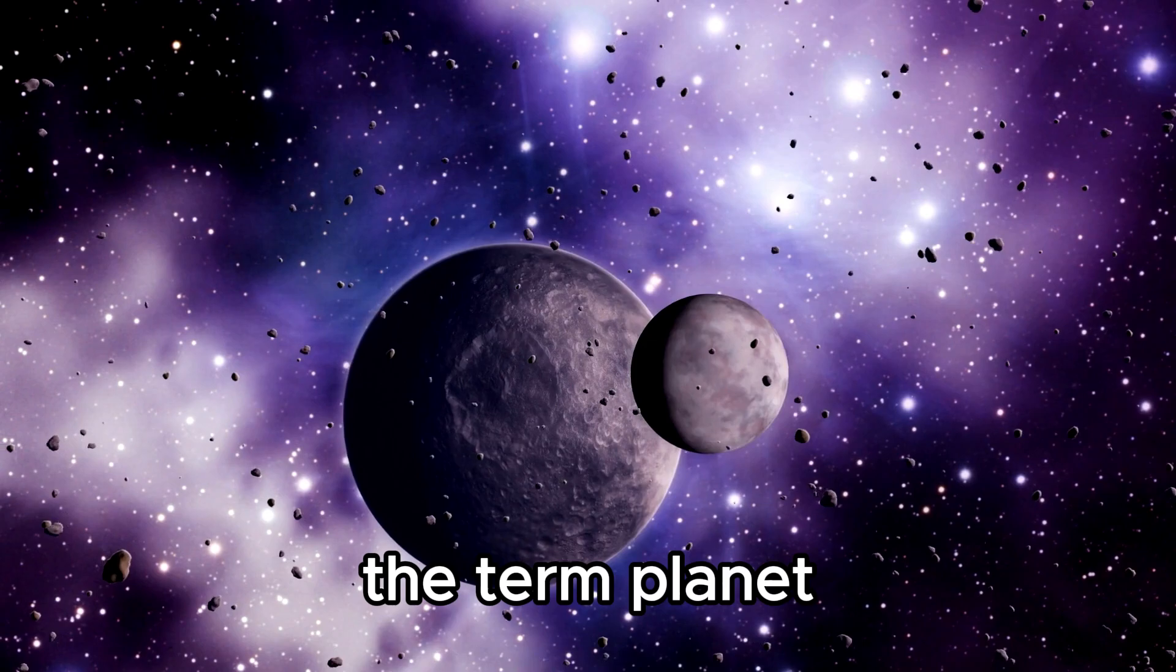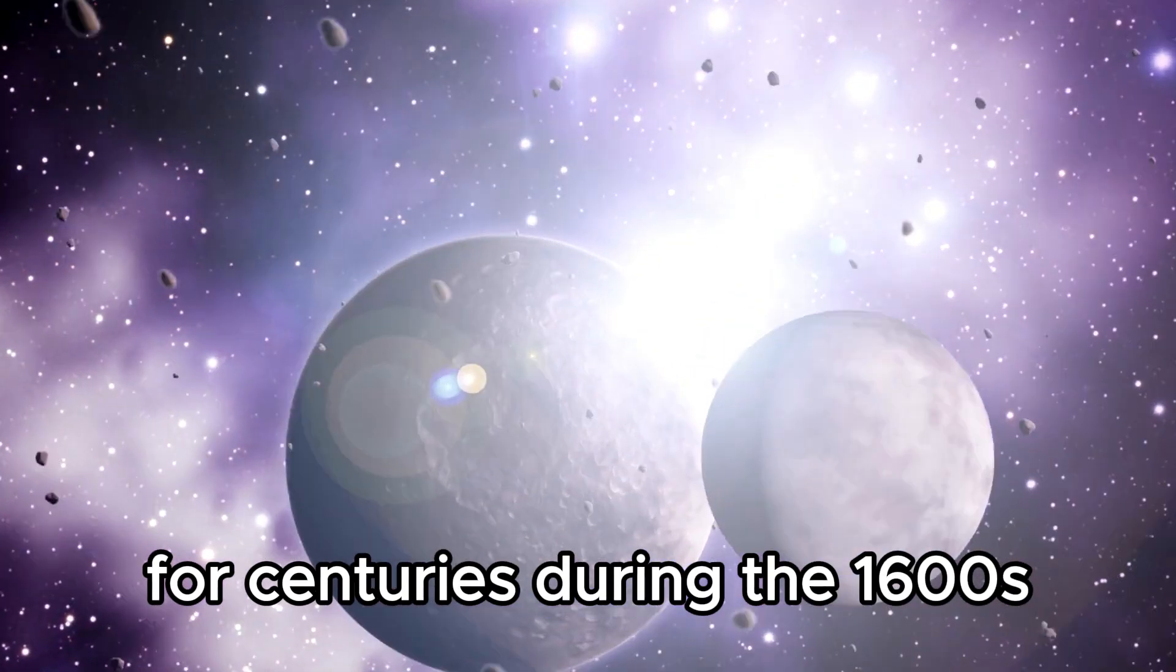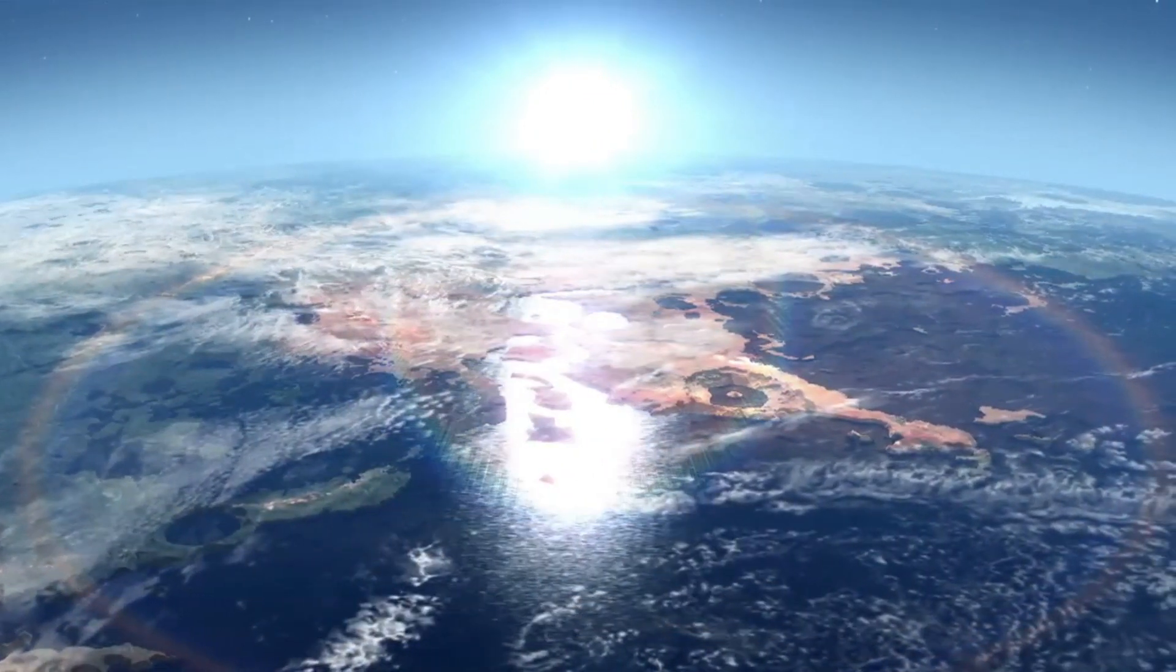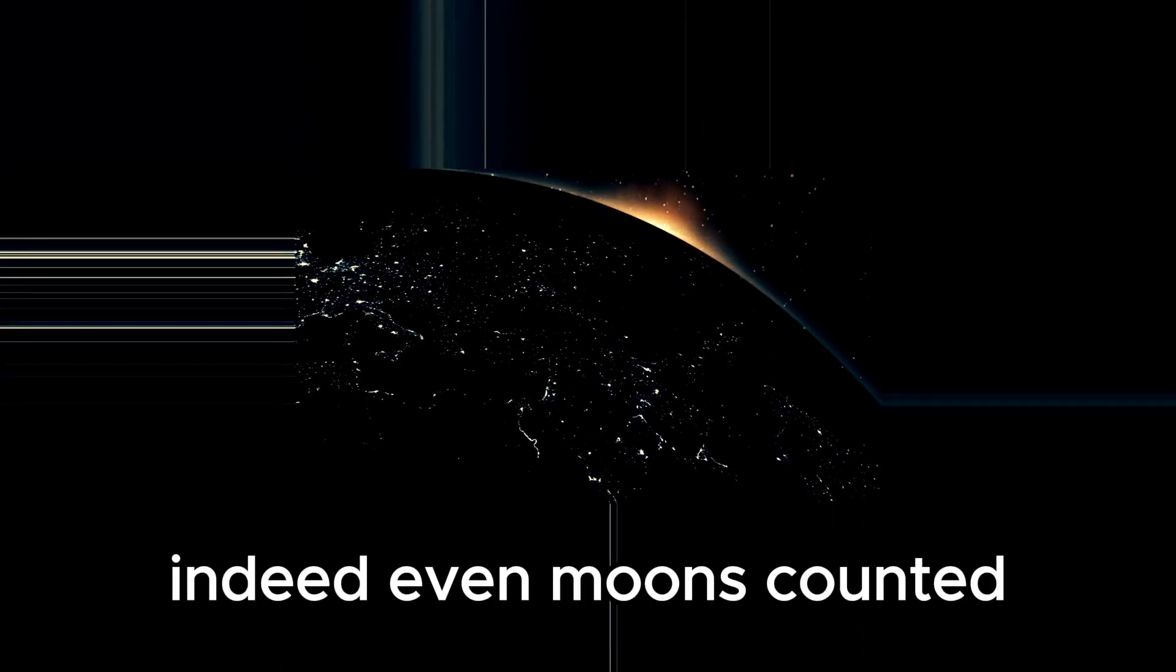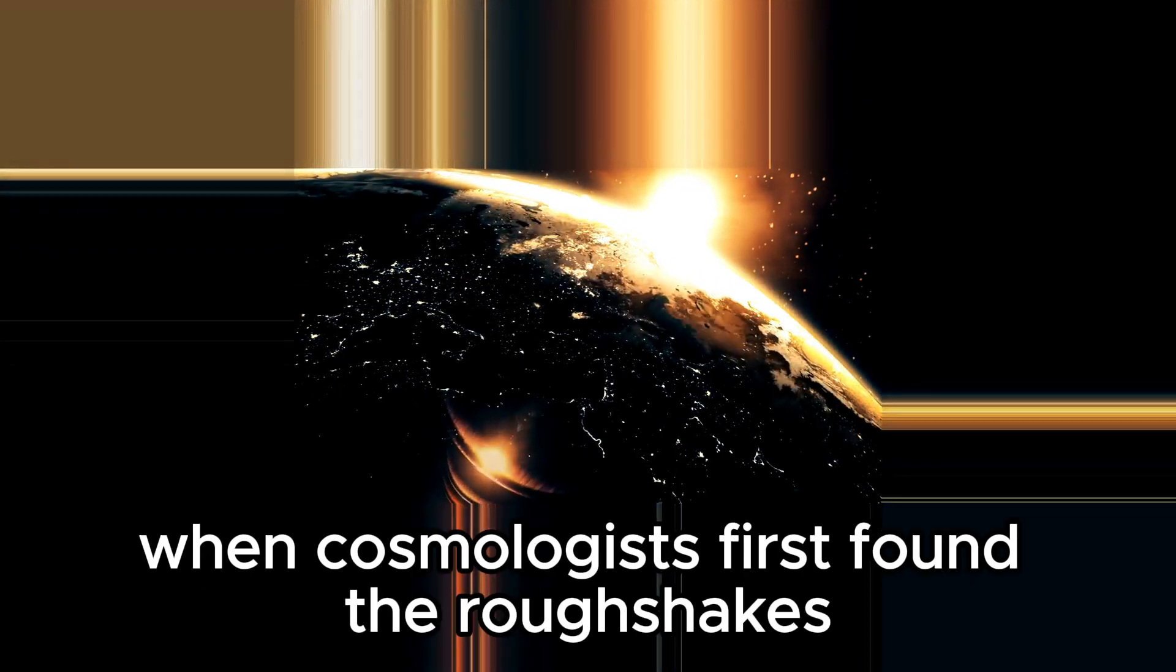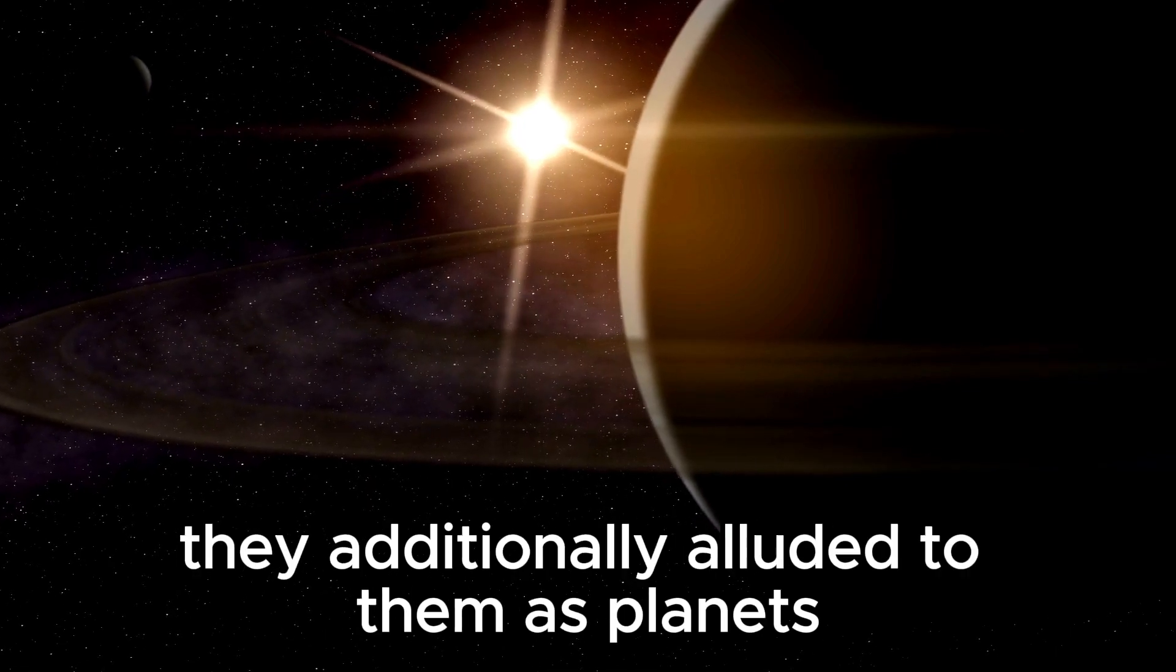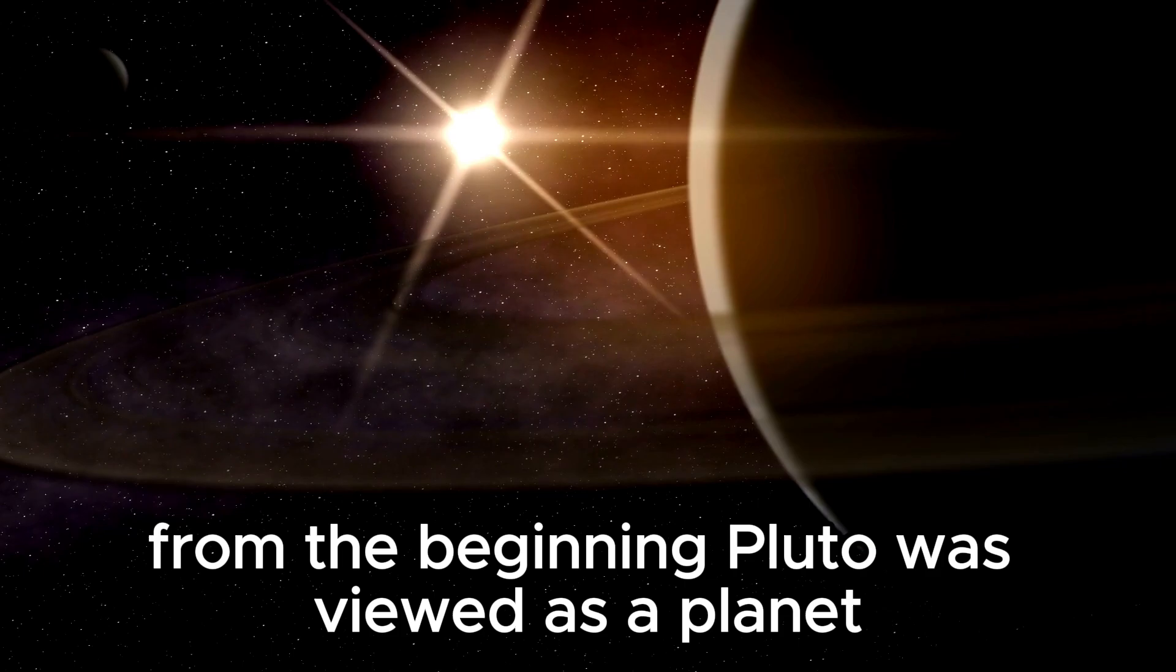The term planet has been used in a much broader sense for centuries. During the 1600s, when Galileo pointed his telescope at Jupiter, everybody thought any large orbiting object overhead was a planet. Indeed, even moons counted. When astronomers first discovered the rocks we now refer to as asteroids during the 1800s, they also referred to them as planets. From the beginning, Pluto was viewed as a planet.